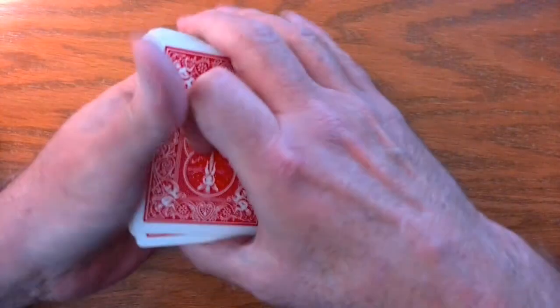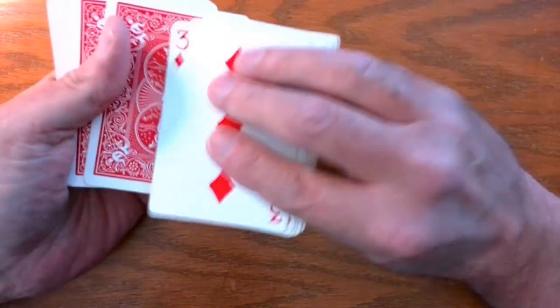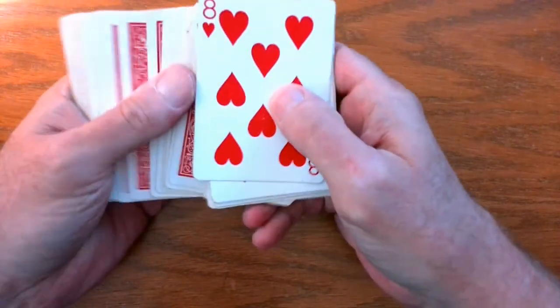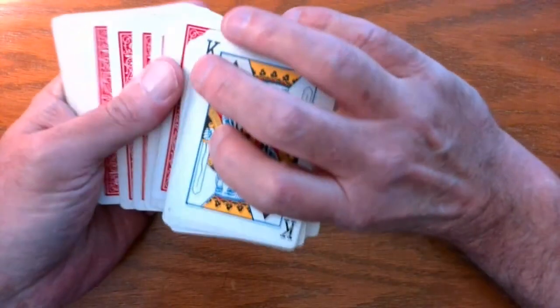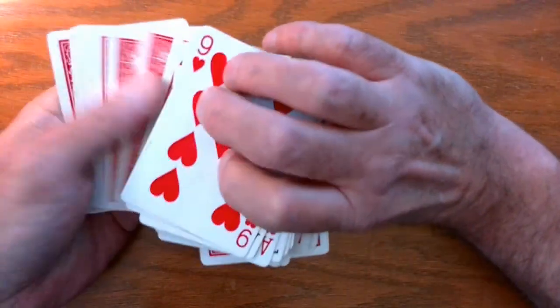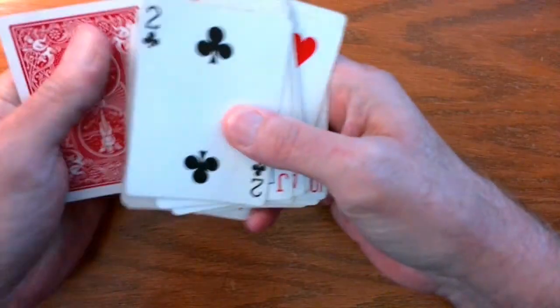Tell you what, I'm really going to shuffle these up bad. This is the old Klondike shuffle it's called. You turn them over like this, and turn them over like this, so they're really mixed up bad. I'm going to try to really mix them up. I don't know if this is going to work or not, but I'll try.